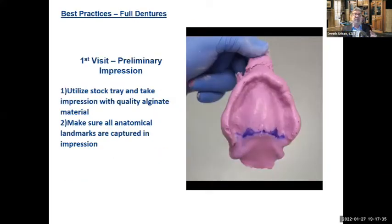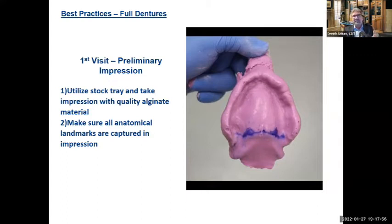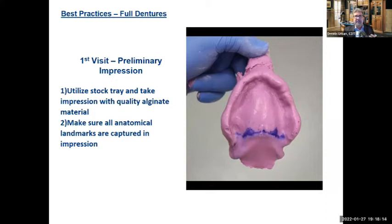For the preliminary impression on that first visit, use a stock tray and a quality alginate or impression material. We need to capture all the anatomical landmarks because we need those to make an accurate custom tray. We don't want to be guessing at areas we're missing. There are a lot of great stock trays now — you can heat them up and form them to the patient's ridge a little better to get a better preliminary impression.